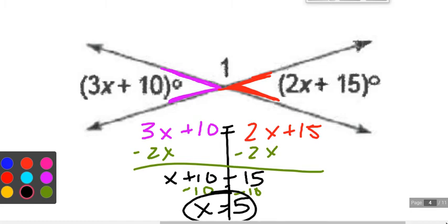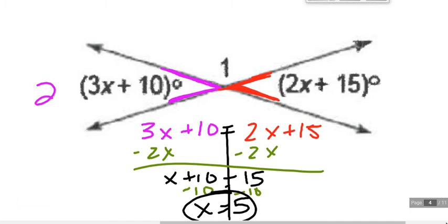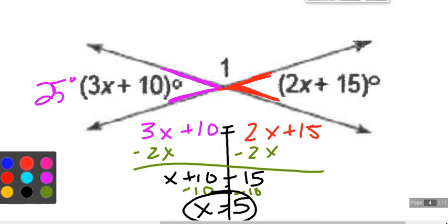So checking your work, just to confirm you're right, we have 3 times x plus 10. That'll be 3 times 5. 15 plus 10 would be 25 degrees. Checking the red side, 2 times 5, 10 plus 15 is going to be 25 degrees. And so we know we're good there too.